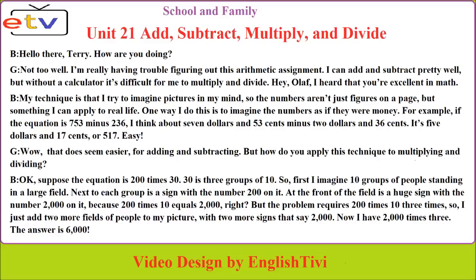'Okay, suppose the equation is 200 times 30. 30 is 3 groups of 10. So first, I imagine 10 groups of people standing in a large field. Next to each group is a sign with the number 200 on it. At the front of the field is a huge sign with the number 2,000 on it, because 200 times 10 equals 2,000. But the problem requires 200 times 10 three times, so I just add two more fields of people with two more signs that say 2,000. Now I have 2,000 times 3. The answer is 6,000.'